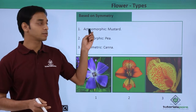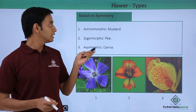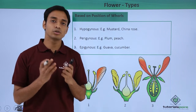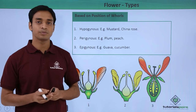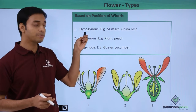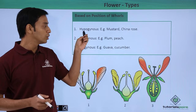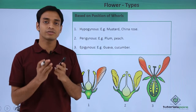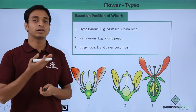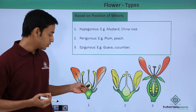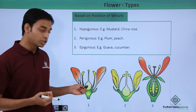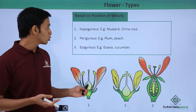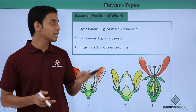Those are the three different types of flowers based on symmetry. In the second type of classification, flowers are classified on the basis of the position of the different whorls. The first type is known as hypogynous flowers. Here the ovary is superior, meaning the position of the gynoecium or the ovary is above all other floral parts. As you can see, the ovary is positioned at the highest level and all other parts are below it.